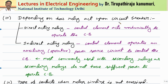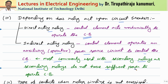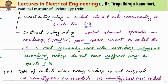Depending on how the relay acts upon the circuit breaker, there are two types. In a direct acting relay, the relay directly operates the circuit breaker with no intermediate circuitry. In an indirect acting relay, the control element operates an auxiliary power source circuit to control the circuit breaker — as seen in the basic structure of the relay. This is most commonly used with secondary relays, since instrument transformer burden should be minimal and the relay lacks sufficient power to directly operate the circuit breaker.